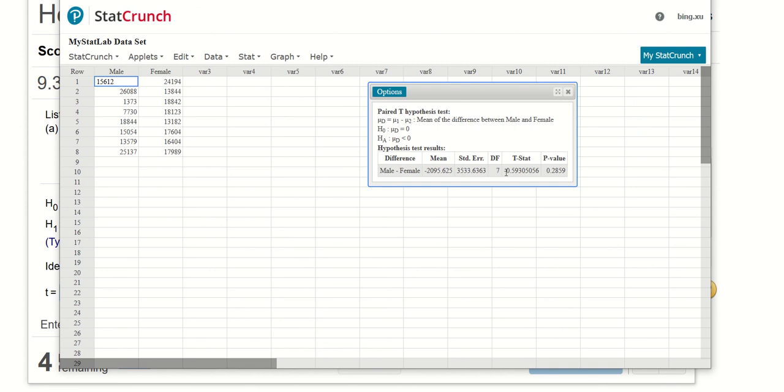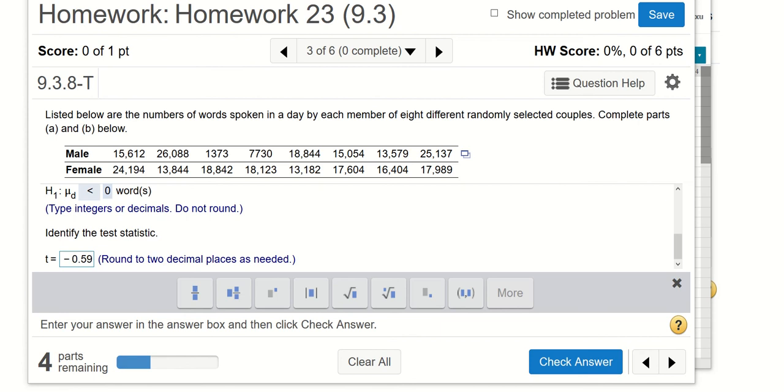Here is your test statistic, T as your test statistic, negative 0.59, round to two decimal places as needed will be negative 0.59.